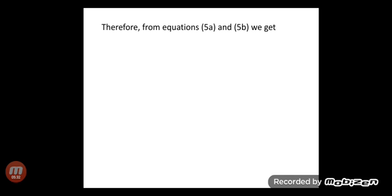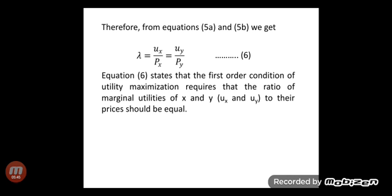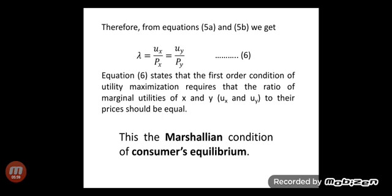Therefore, from equations 5a and 5b we get λ = ux/px = uy/py, which is equation number 6. Equation 6 states that the first order condition of utility maximization requires that the ratio of marginal utilities of x and y to their respective prices should be equal, and this is nothing but the Marshallian condition of consumer's equilibrium.